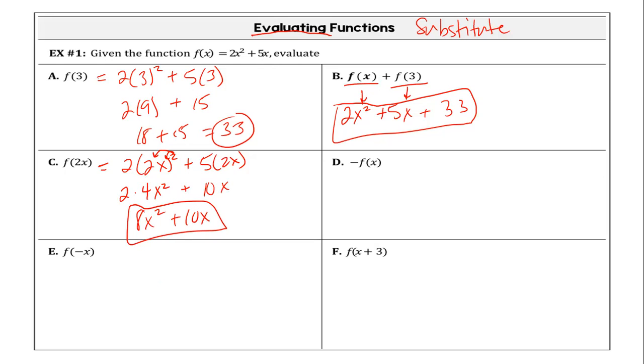On D. So on D, it says that I'm taking the function and I'm making it a negative. That means I'm taking the function and my output is going to be the opposite of whatever is happening. So this whole thing is going to be turned into its opposite. So I'm distributing that negative. So we're going to end up with negative two X squared minus five X.